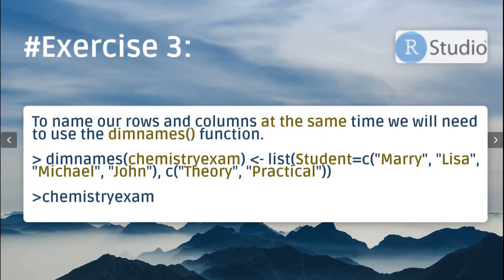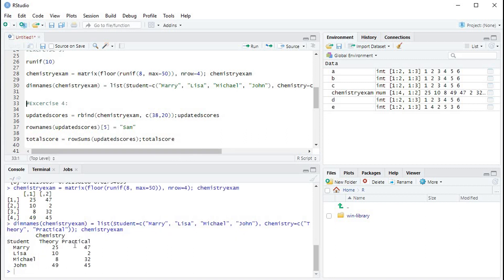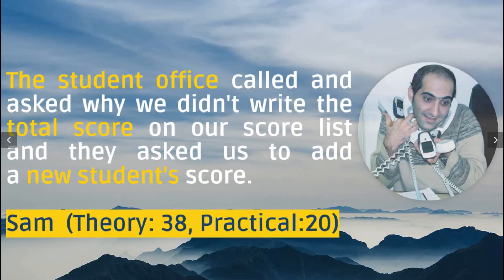To name rows and columns at the same time we use the dimnames function. Don't worry about the list() function inside dimnames — we will discuss it in later videos. We put our matrix inside dimnames and assign a list containing the students' names and the theory and practical exam labels. Now it prints out the students' names and theory and practical exam columns.